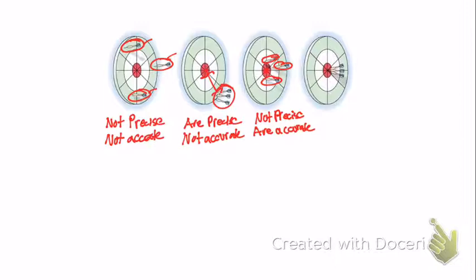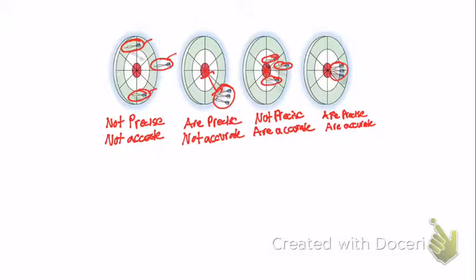The last target pretty much speaks for itself. Are the measured values precise? Absolutely — they're grouped together nicely, so they are precise. And what about accuracy? Absolutely. So the last target has both good precision and good accuracy. Hopefully that's a good example for determining accuracy and precision with a group or set of data points.